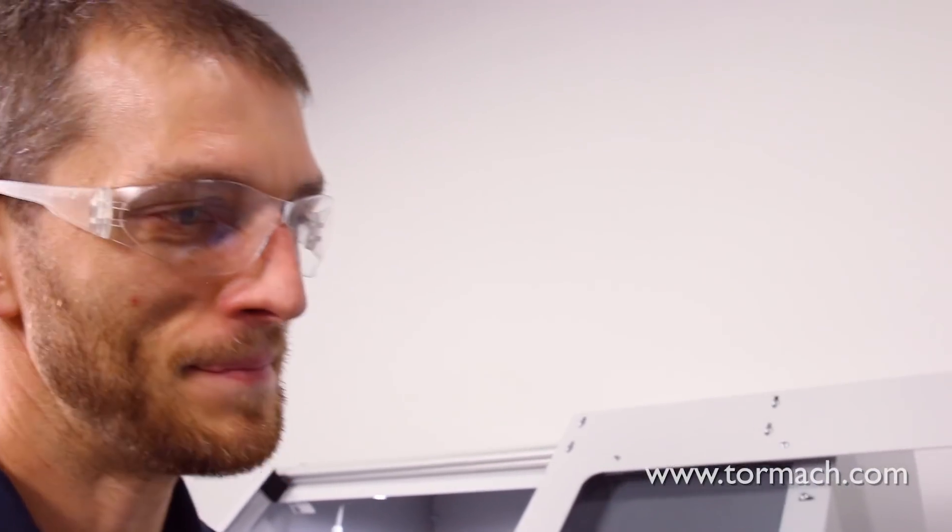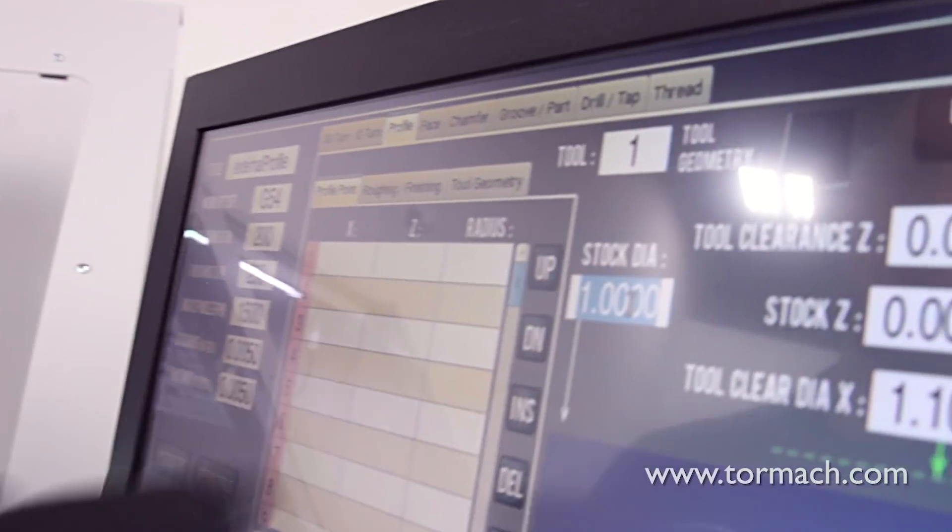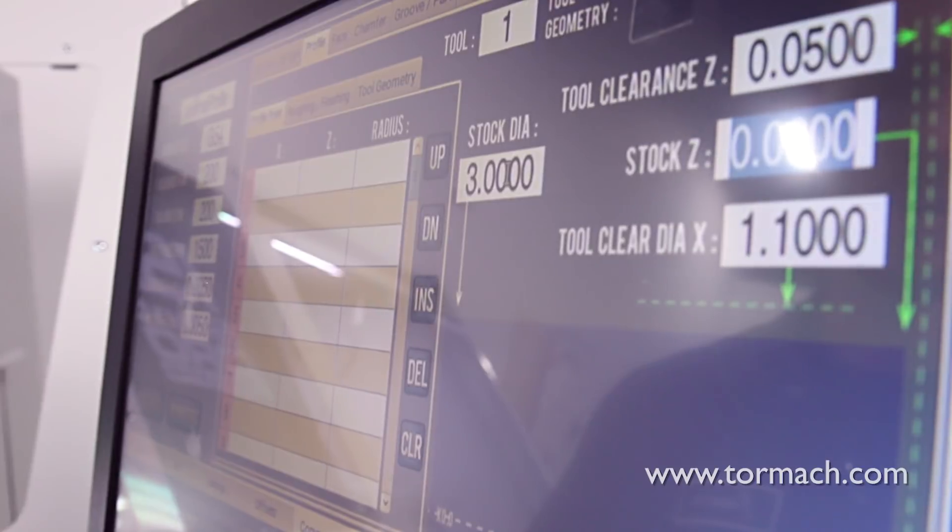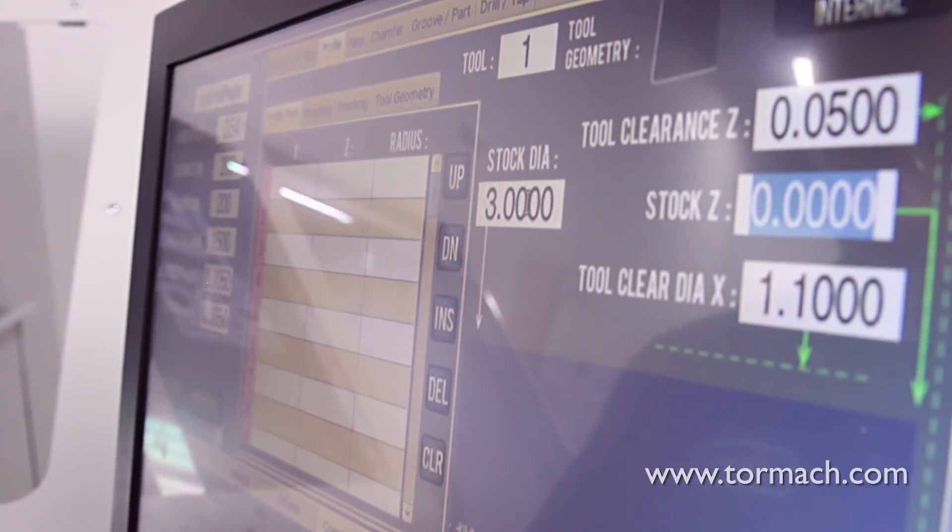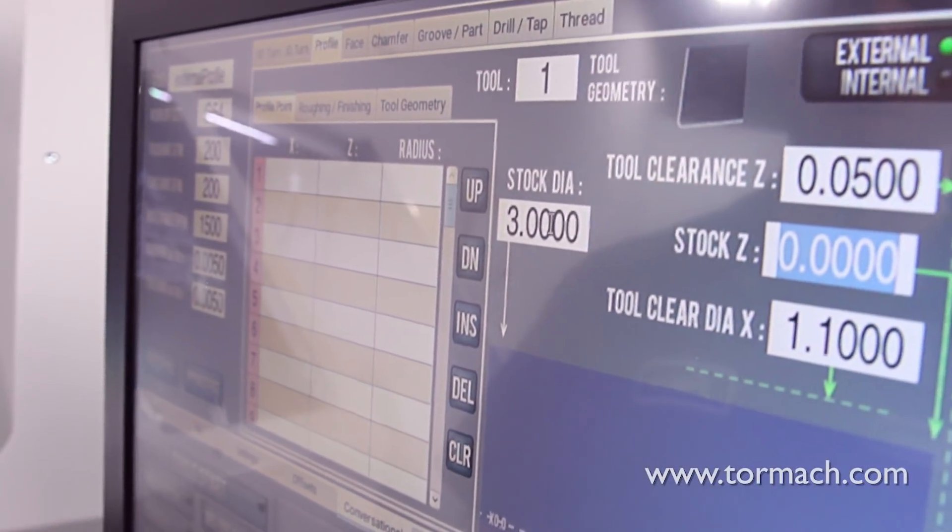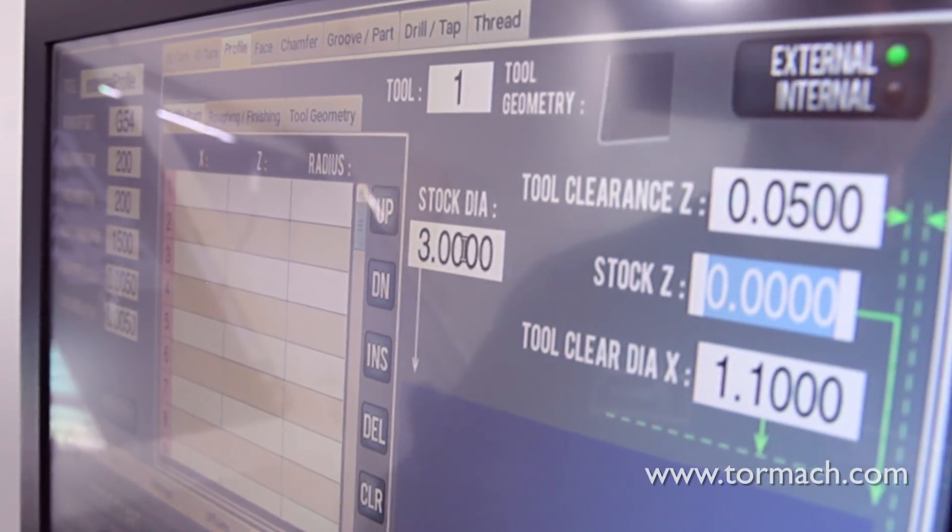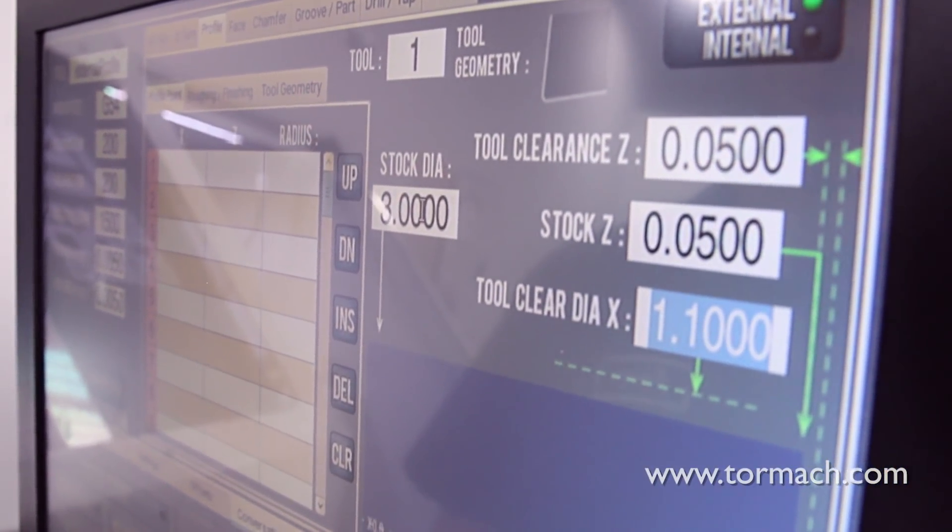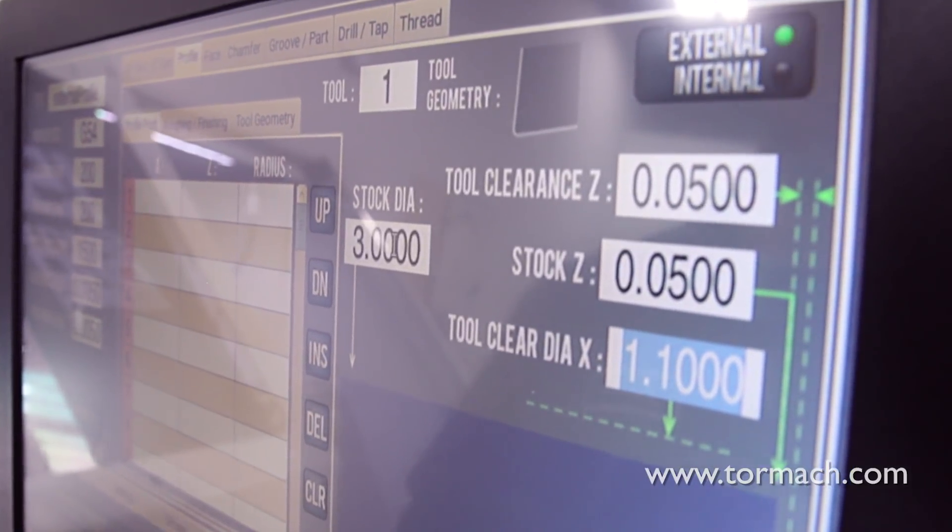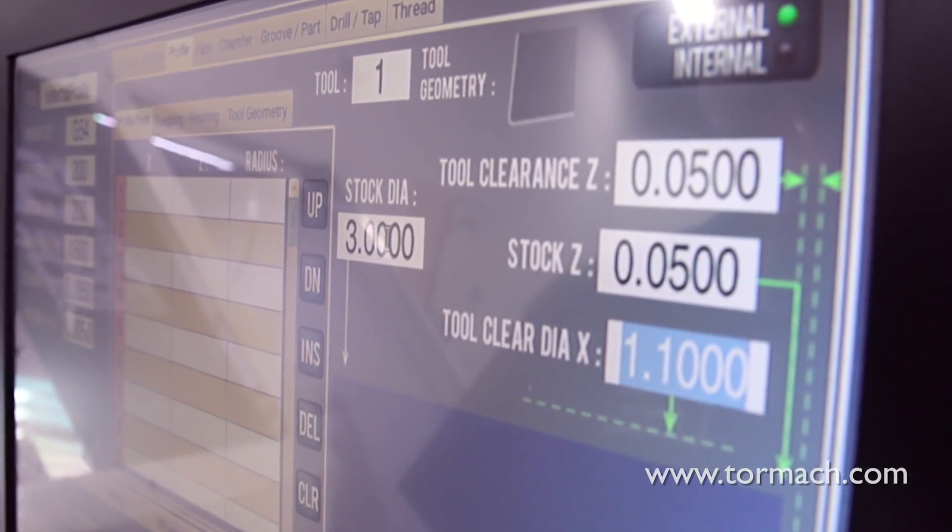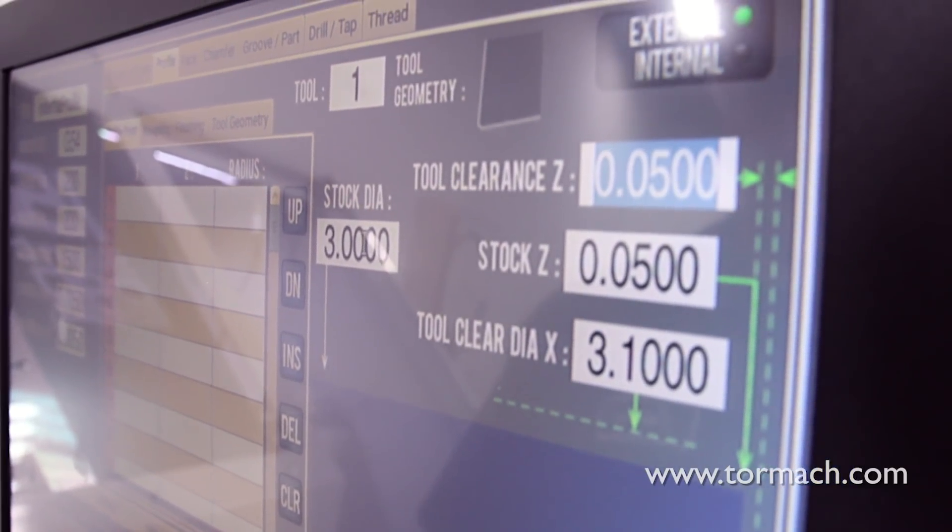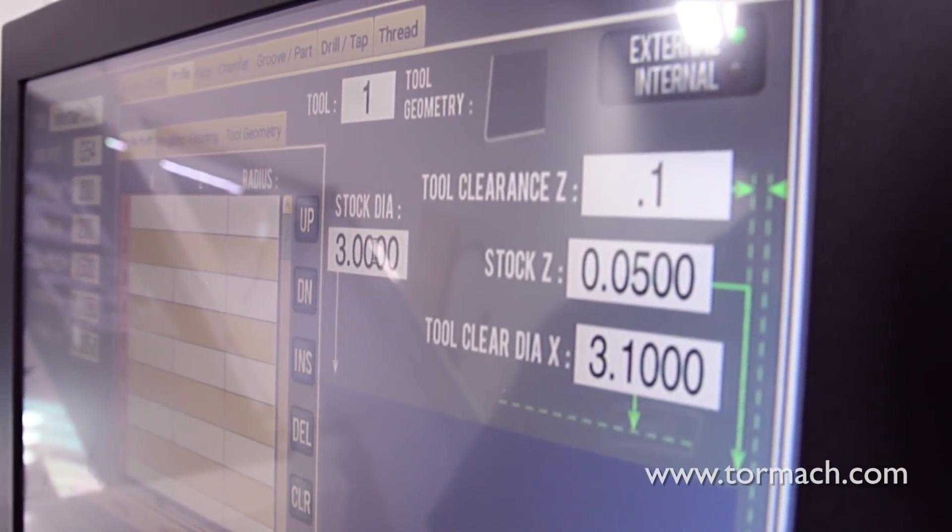So let's make a snowman. We're going to start out. We have a three inch diameter piece of stainless steel, 4.1 inches long. I was going to make the snowman about four inches long. So we'll just go ahead and say we have 50 thousandths on the face. We're going to set our tool clearance diameter to 3.1 inches and our Z clearance we'll just set at 100 thousandths.